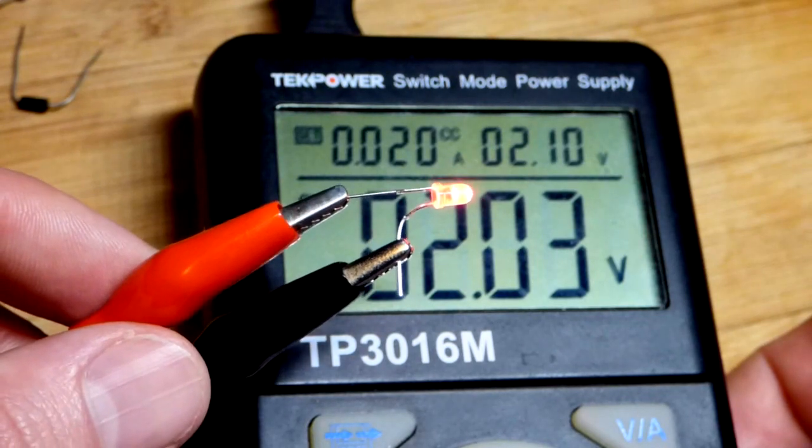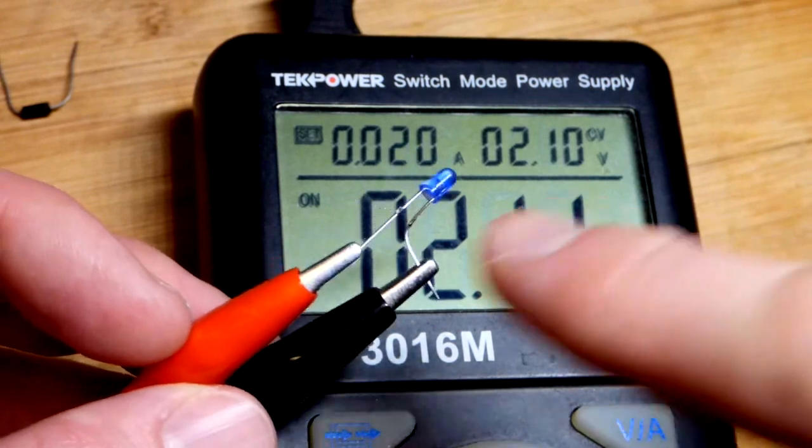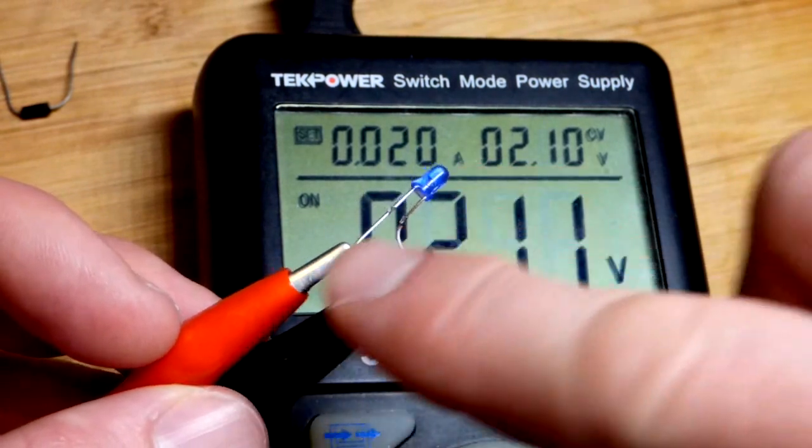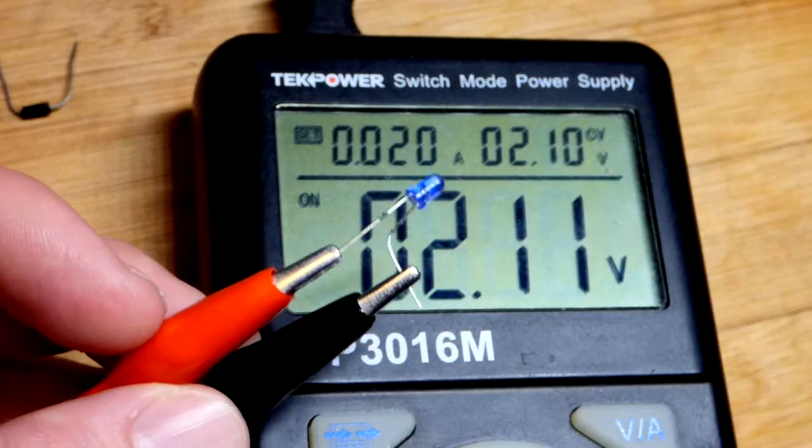Now let's swap it out with the blue LED. So here we got the blue LED again. The long lead, the anode. The red alligator clip, positive. The short lead, the cathode. Right there we got the black alligator clip, negative.